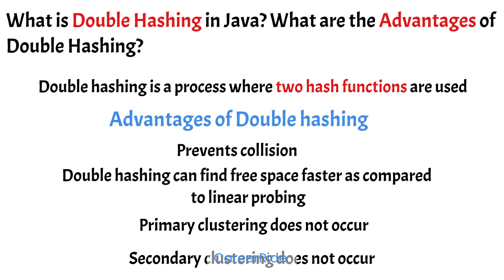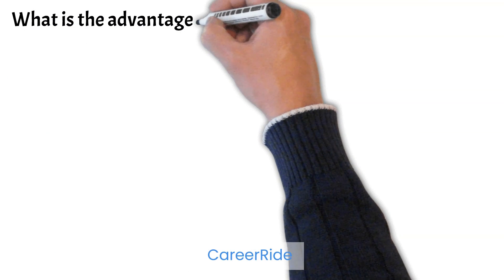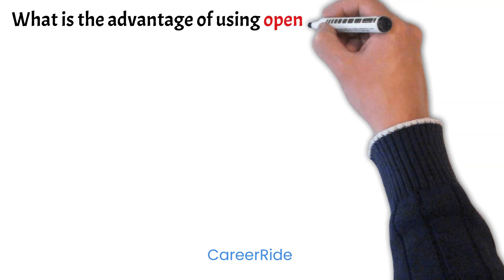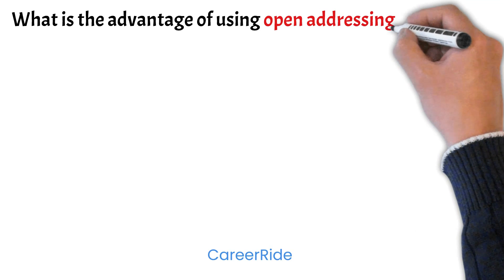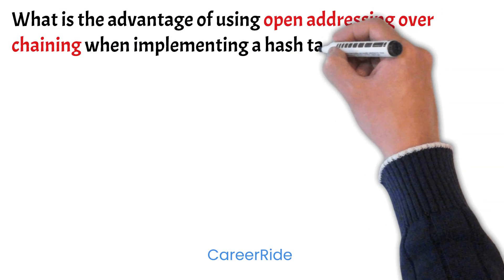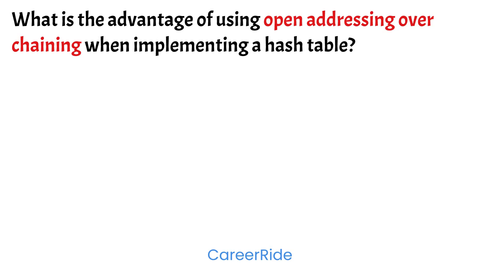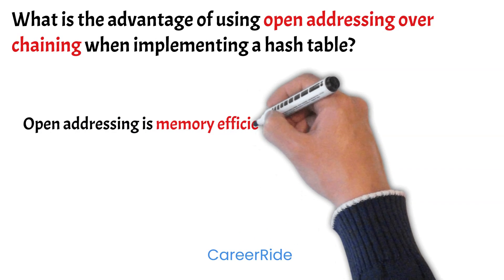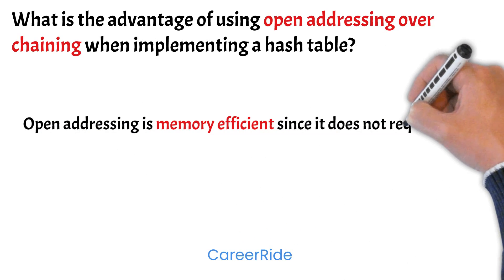Now moving on to the last question in this series: What is the advantage of using open addressing over chaining when implementing a hash table? The main advantage of using open addressing over chaining is that open addressing is memory efficient since it doesn't require any extra data structure.